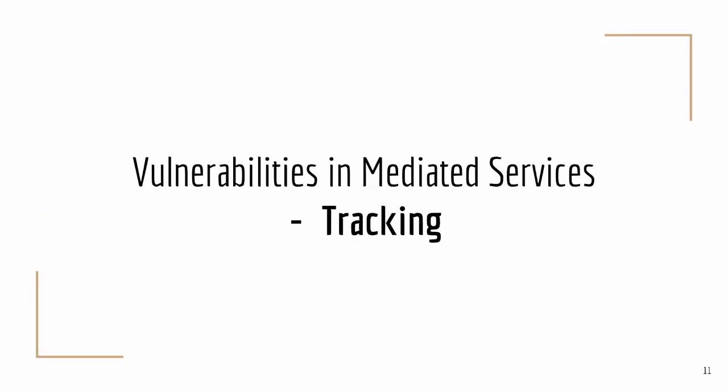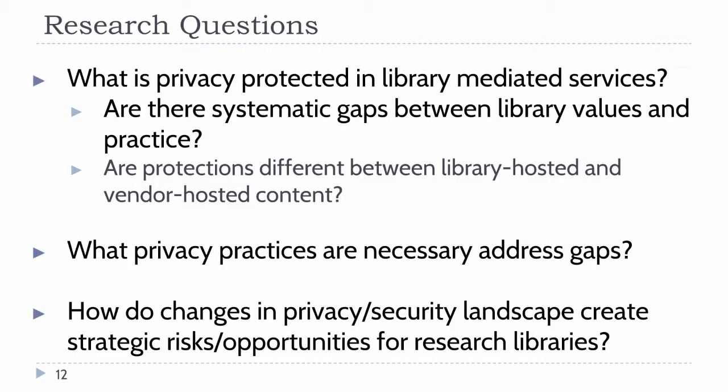We did some research looking at vulnerabilities in two areas: one, what information can we see being collected, and two, what do publisher privacy policies say they can do with such information — how strong are the protections they give in writing? The first turned out to be a lot easier to do than the second. We're interested in whether there are systematic gaps — whether protections differ for things libraries keep versus vendors, what practices are necessary, and how changes are affecting things.